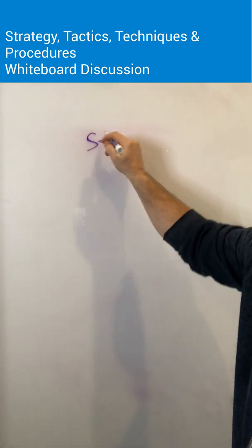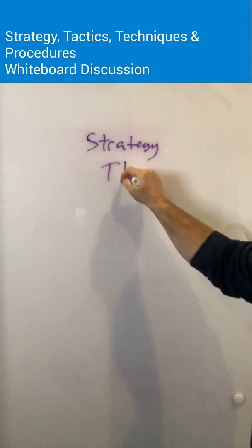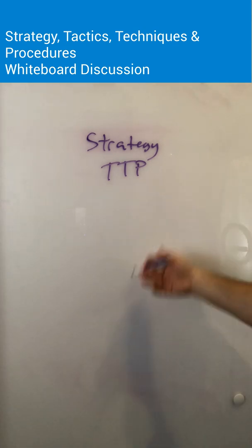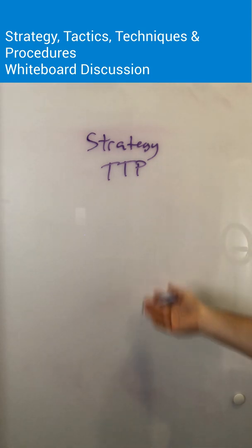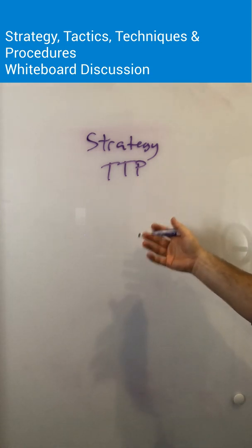Hello everyone, welcome to the whiteboard. Today we're going to discuss strategy as well as a term called TTP. These are terms that are very common in threat intelligence and cybersecurity. You've come across these if you've read any kind of profile about an attack or a breakdown of why some activities happen — they'll make some reference to the term TTP or touch on strategy.